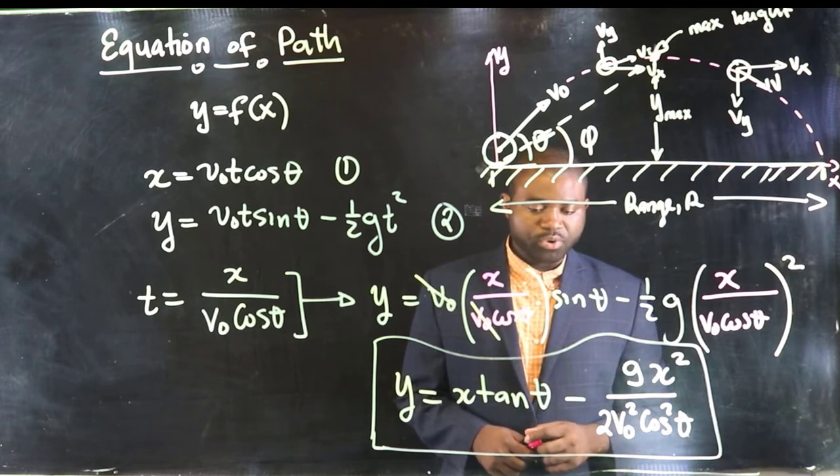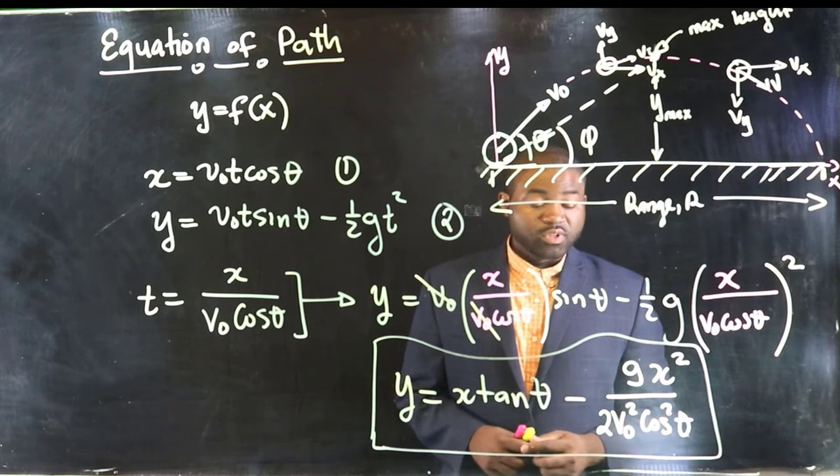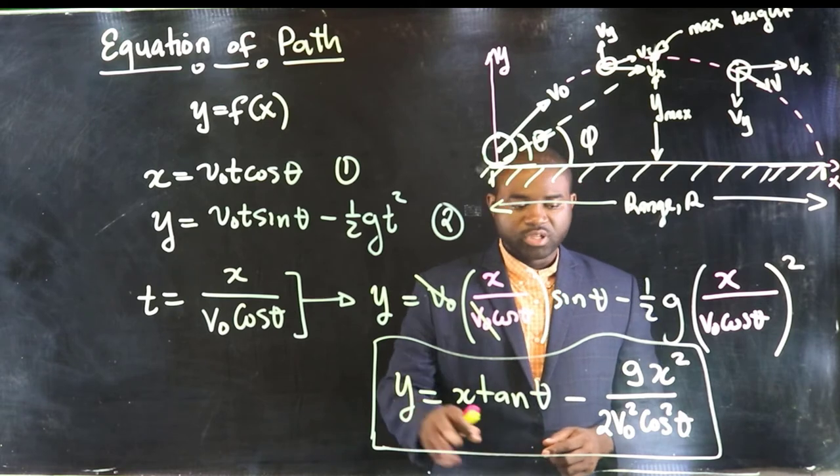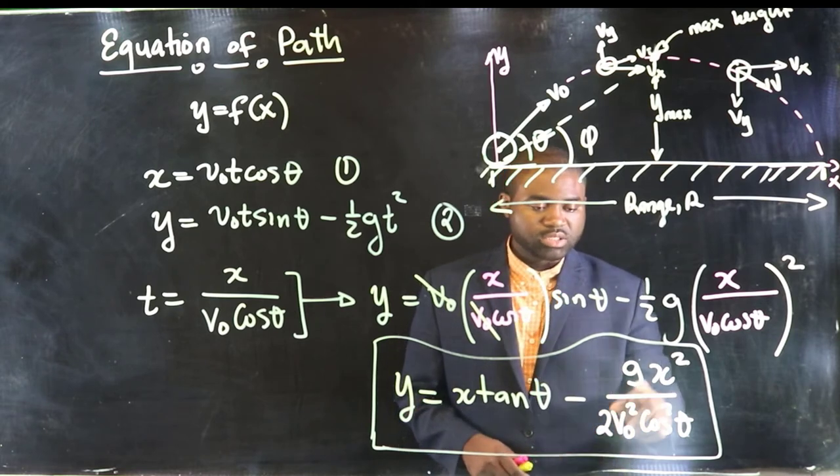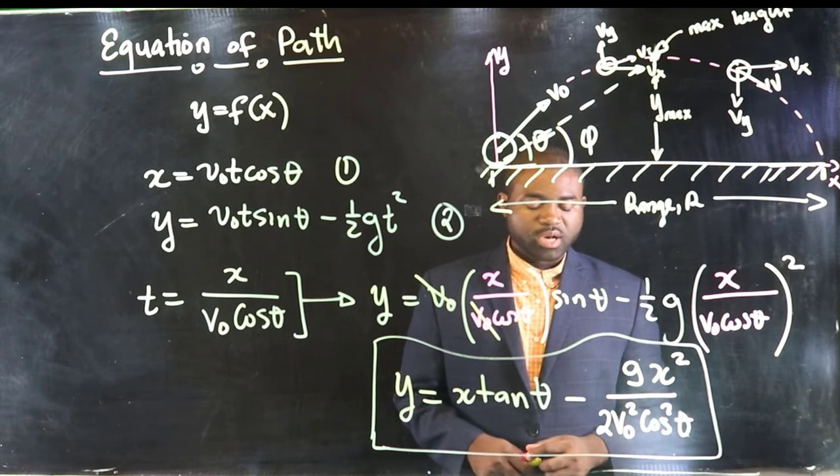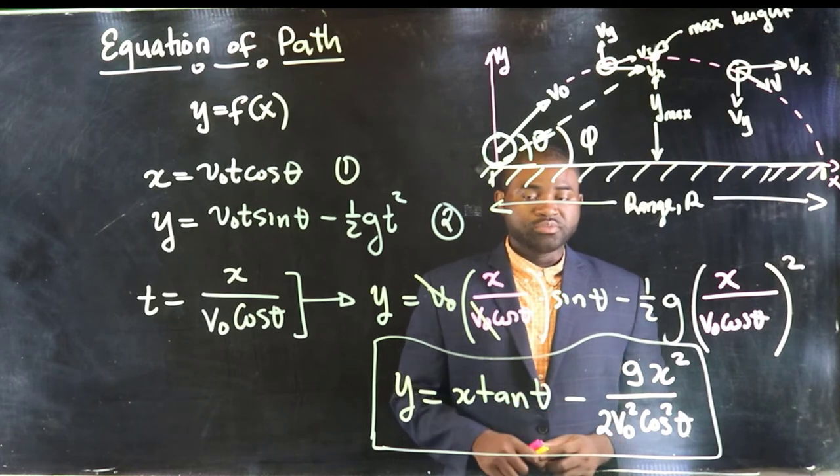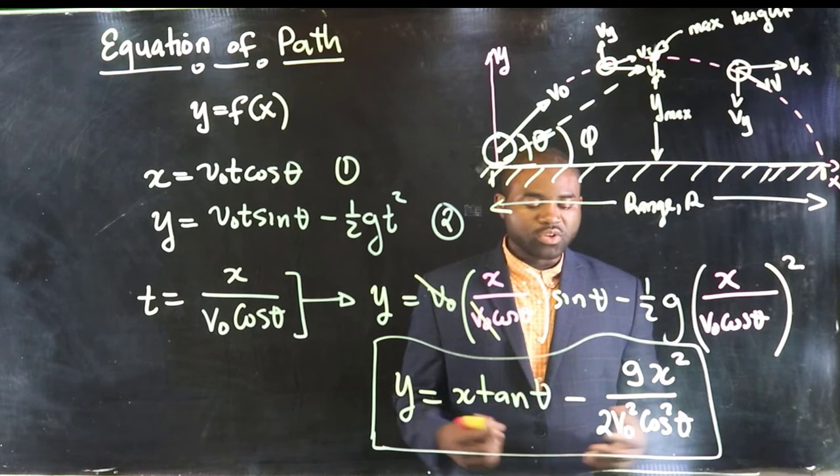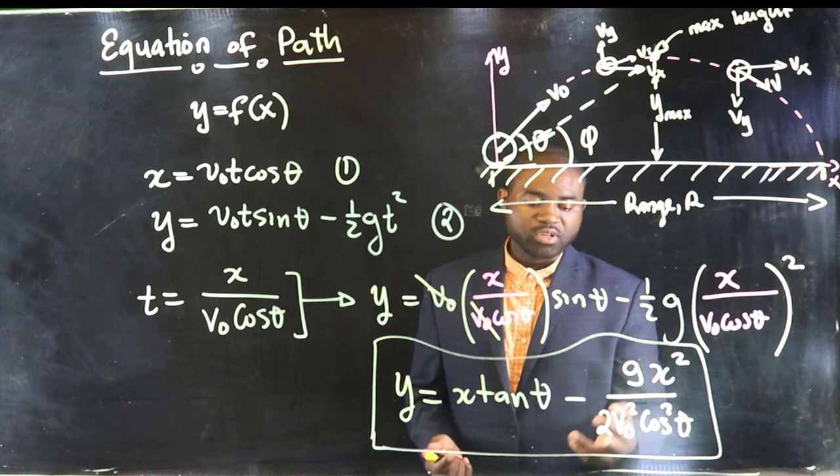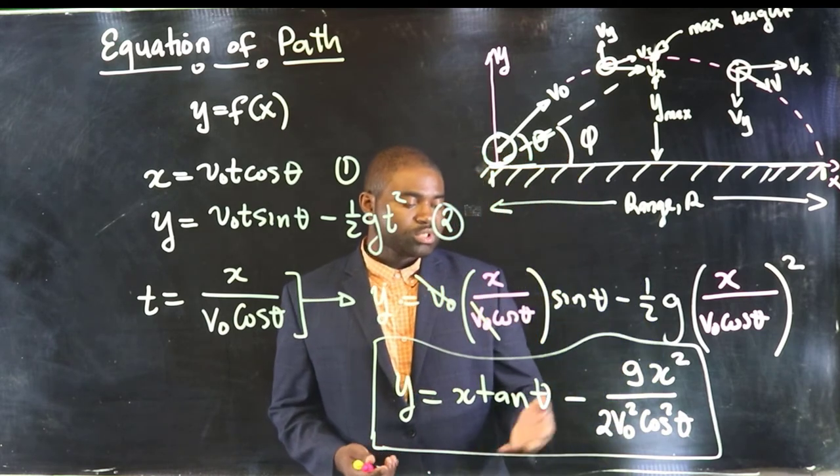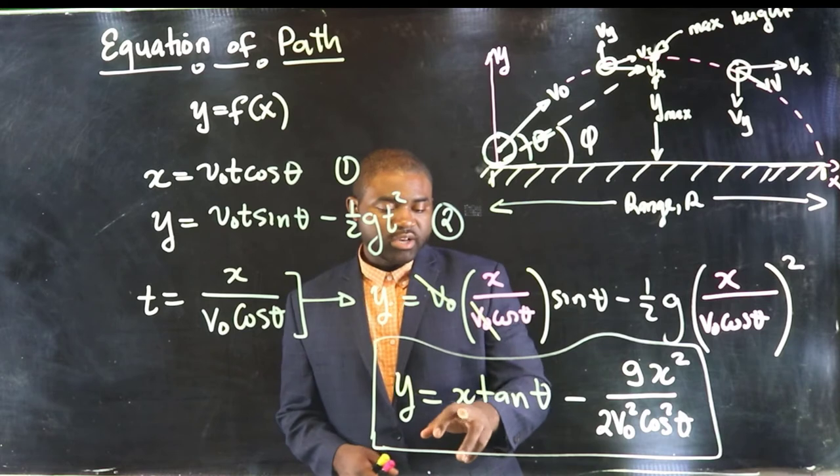When you are given a problem where you are asked to calculate maybe the initial velocity given the height as well as the range as well as the angle of projection, then you can easily solve for v₀.